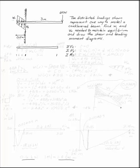The distributed loads shown on the beam represent one way to model a cantilevered beam. In general, if we have a cantilevered beam, we draw it as a wall and a beam stuck into it as if it were somehow magically glued to that spot.